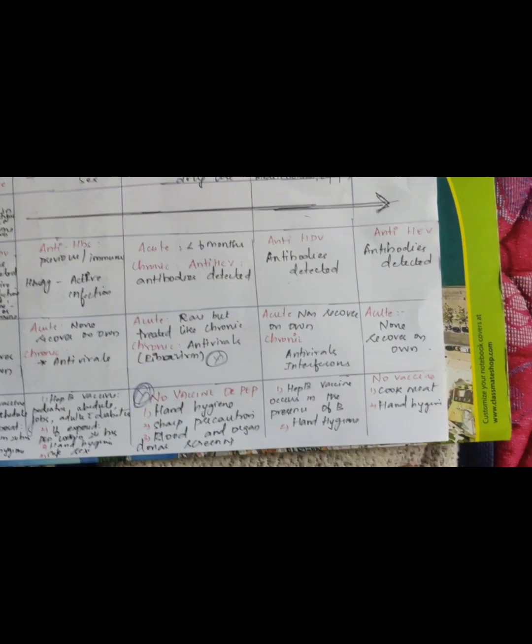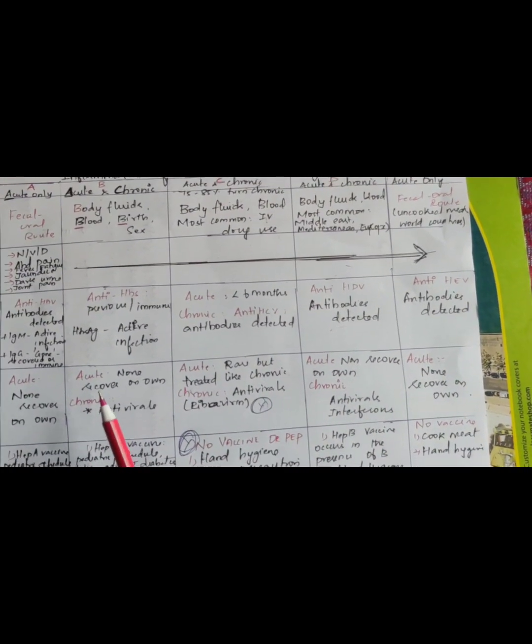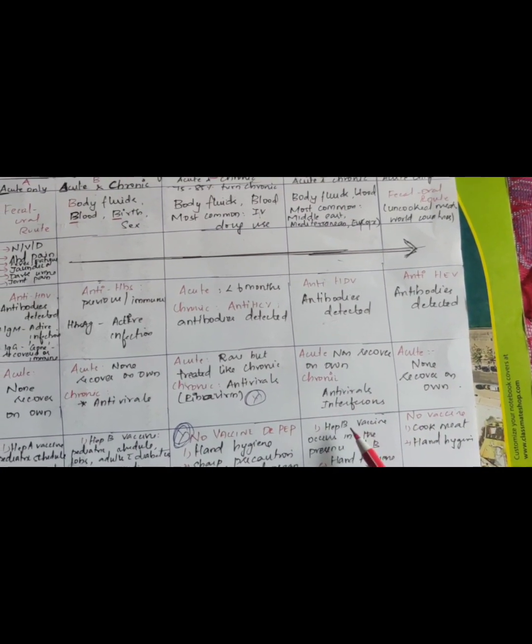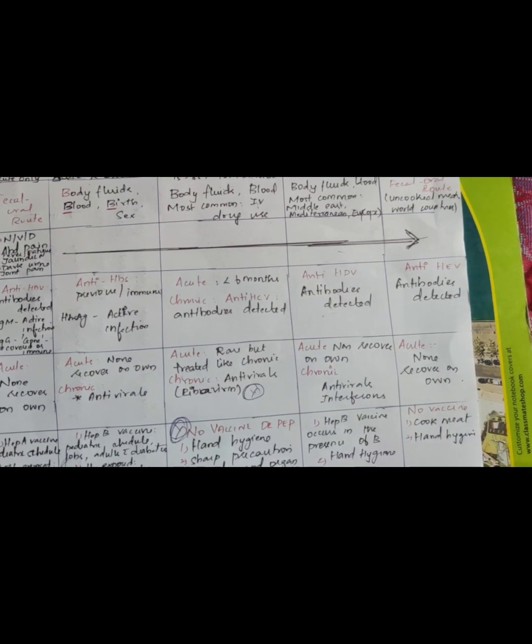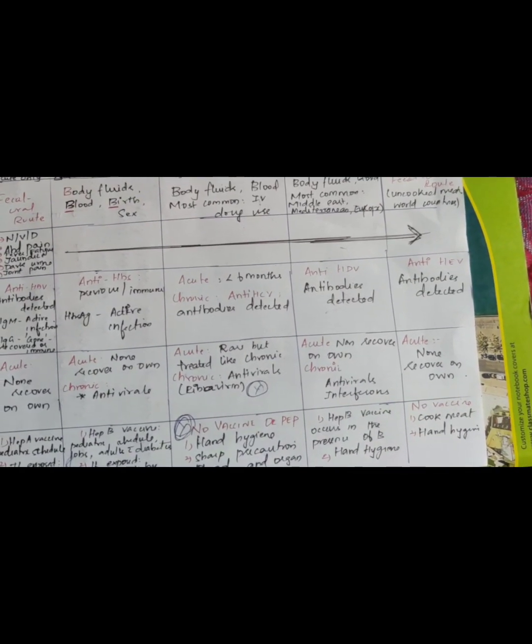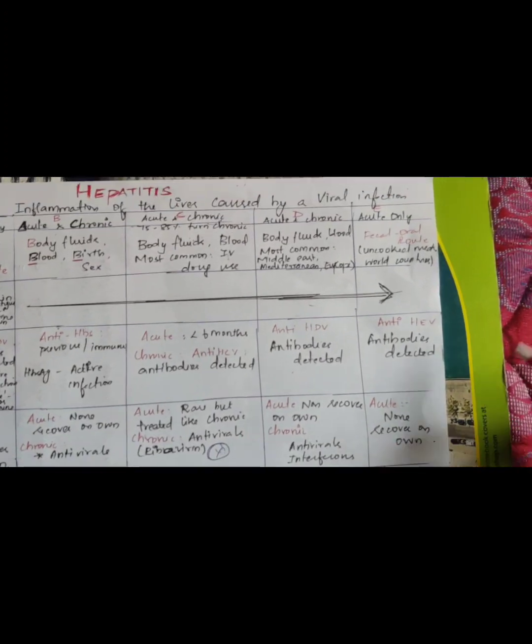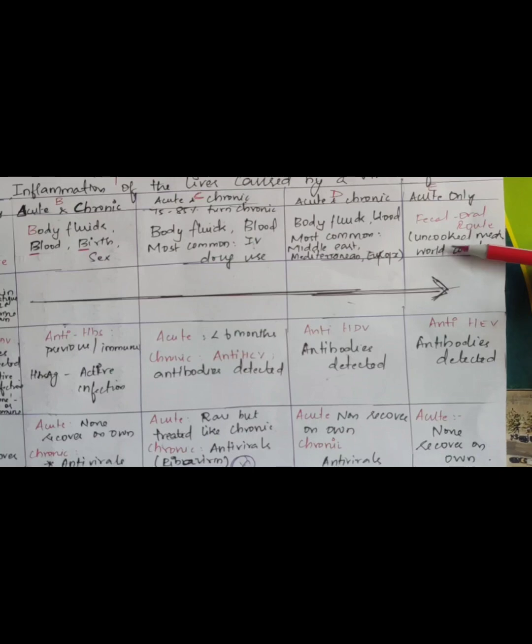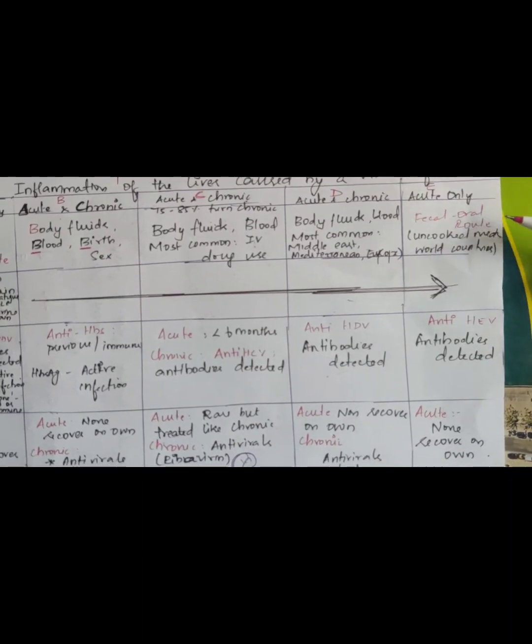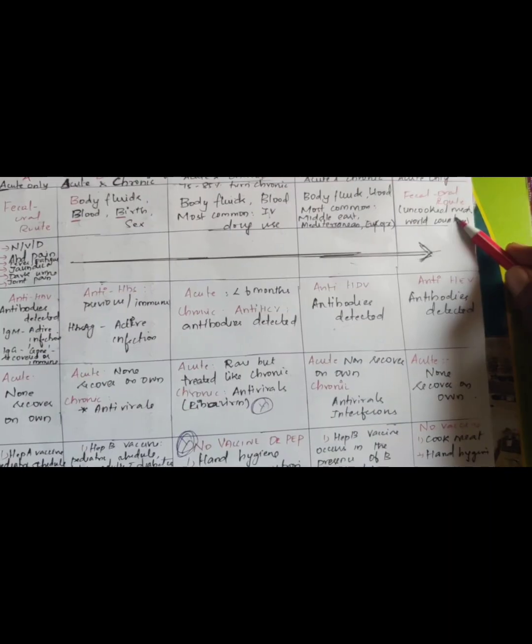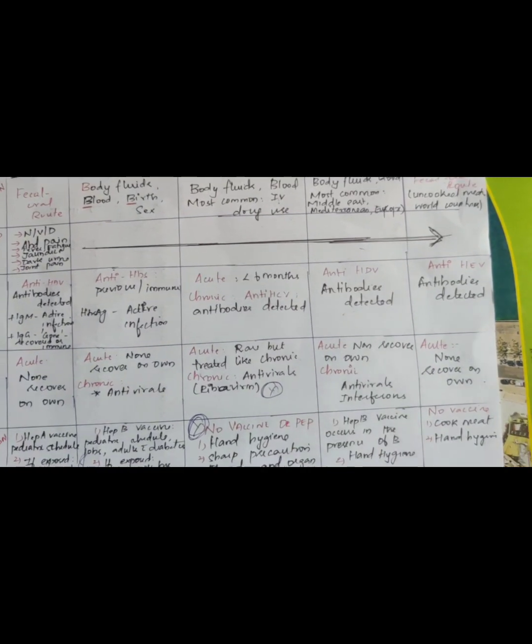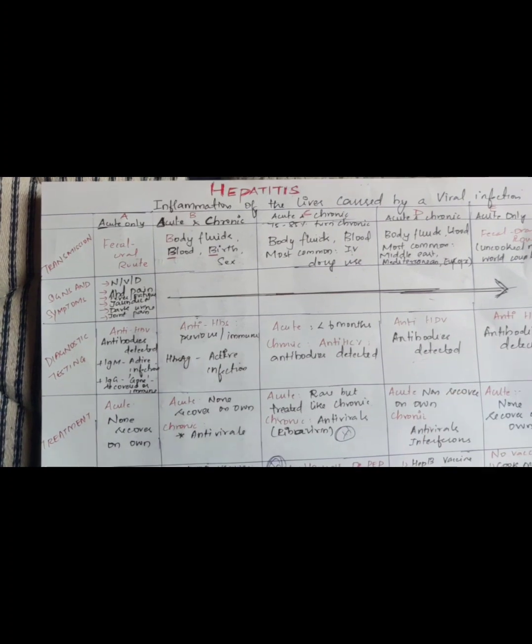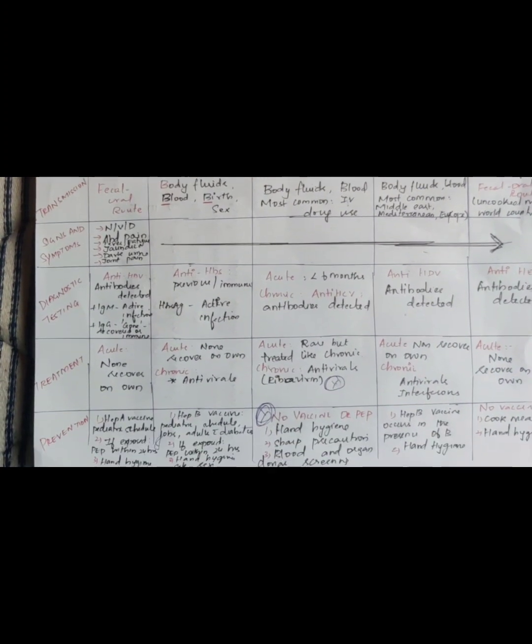Hepatitis D is already said. Hepatitis B affects hepatitis D, so hepatitis B vaccine, hepatitis B prevent hepatitis D and hand hygiene. Hepatitis E transmission: feco-oral route, uncooked. Feco-oral route, how prevent? Cooked meat, cook meat. This is a short video.